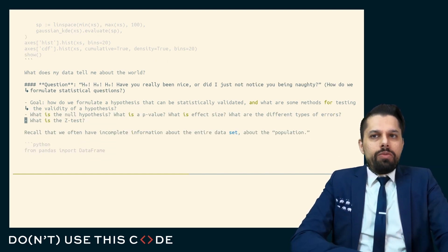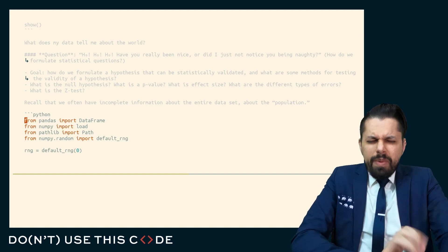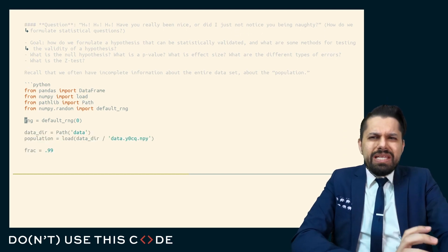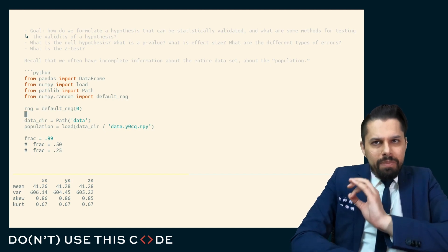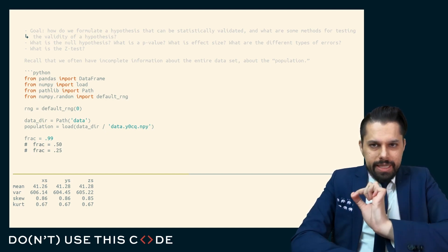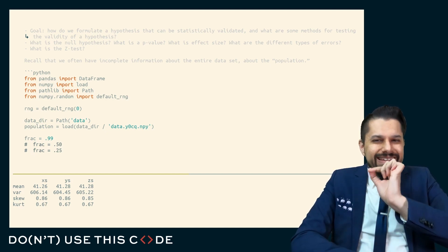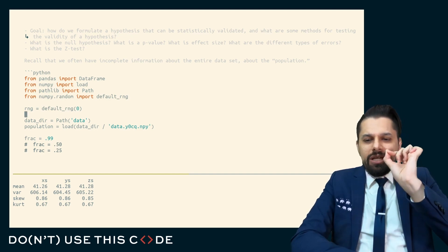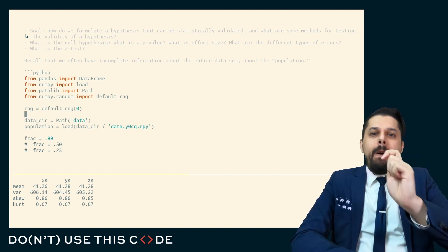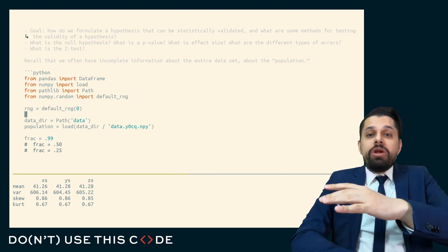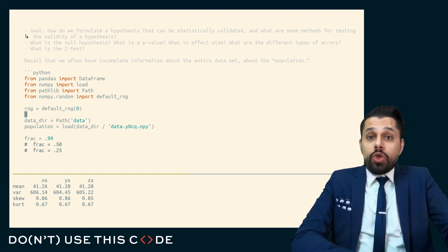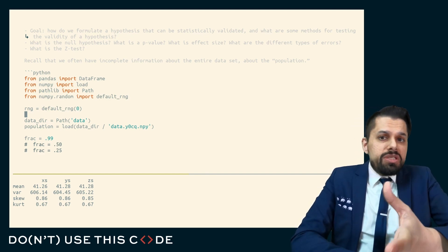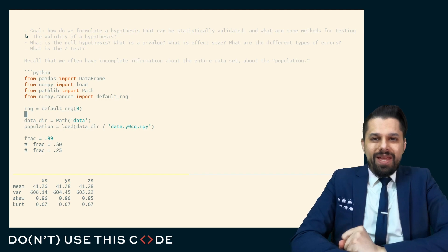Let's talk about how we formulate a test, what that test might be, and how to make it concrete. Let's say we have some data. When we're talking about our data, we're often talking about not the actual reality of every single instance of something happening, but some sampling of that. We don't have the ability to survey every single person in the world — we'll sample just a smaller set and make conclusions based off of that.